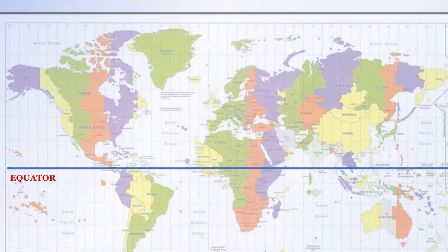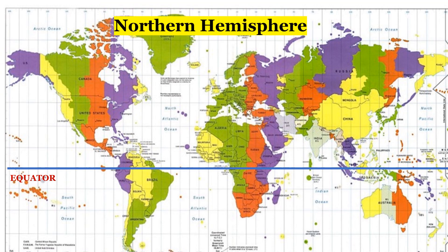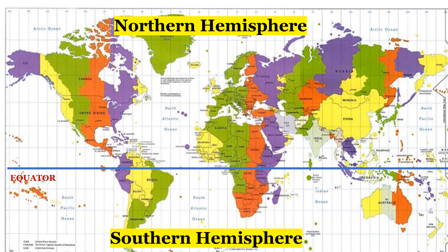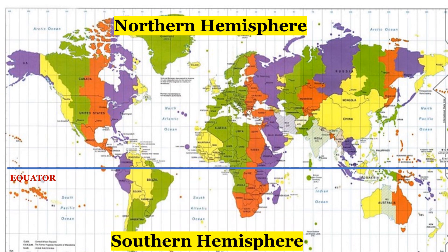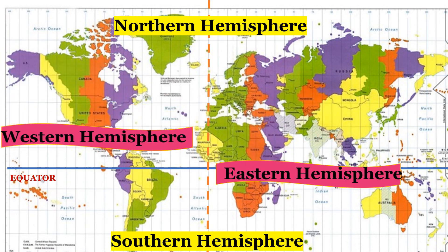Here is the equator, which divides the Earth latitudinally into two hemispheres: the northern hemisphere, which is above the equator, and the southern hemisphere, which is below the equator. This is the prime meridian, which divides the Earth into two equal halves longitudinally — the eastern hemisphere and the western hemisphere.